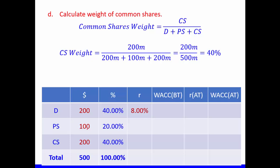The weight of common shares is market value of common shares divided by the total: 200 divided by 500 = 40%. Remember that the weight of debt plus the weight of preference shares plus the weight of common shares must equal 100%. If you don't get 100%, something is wrong with your calculations.